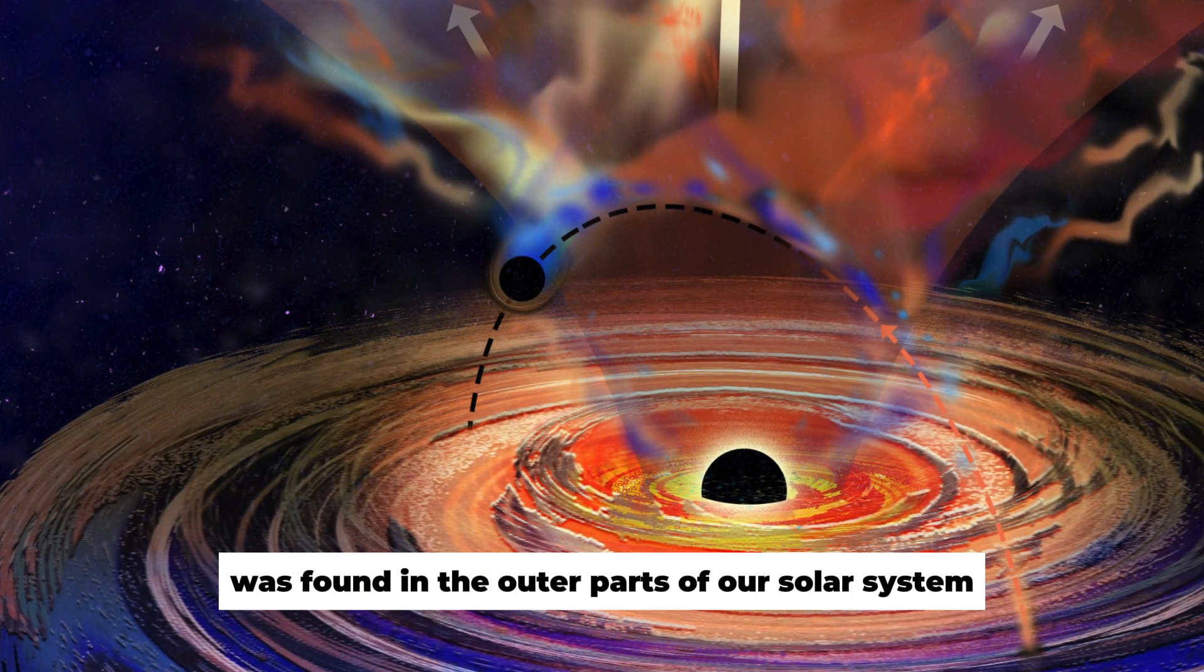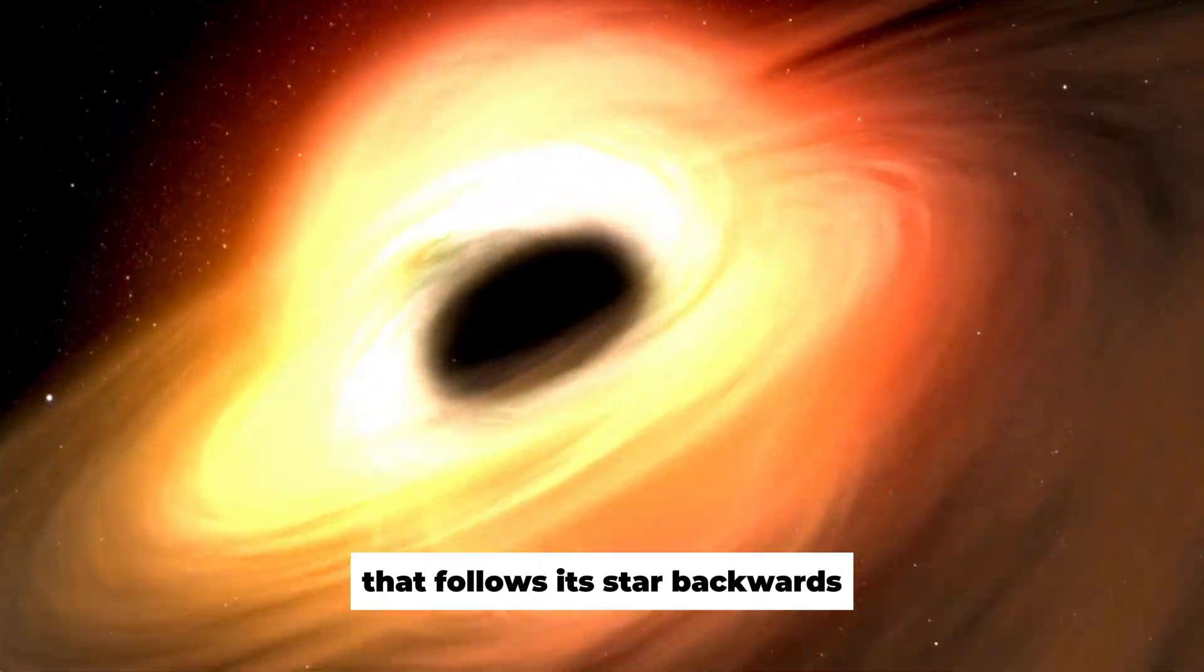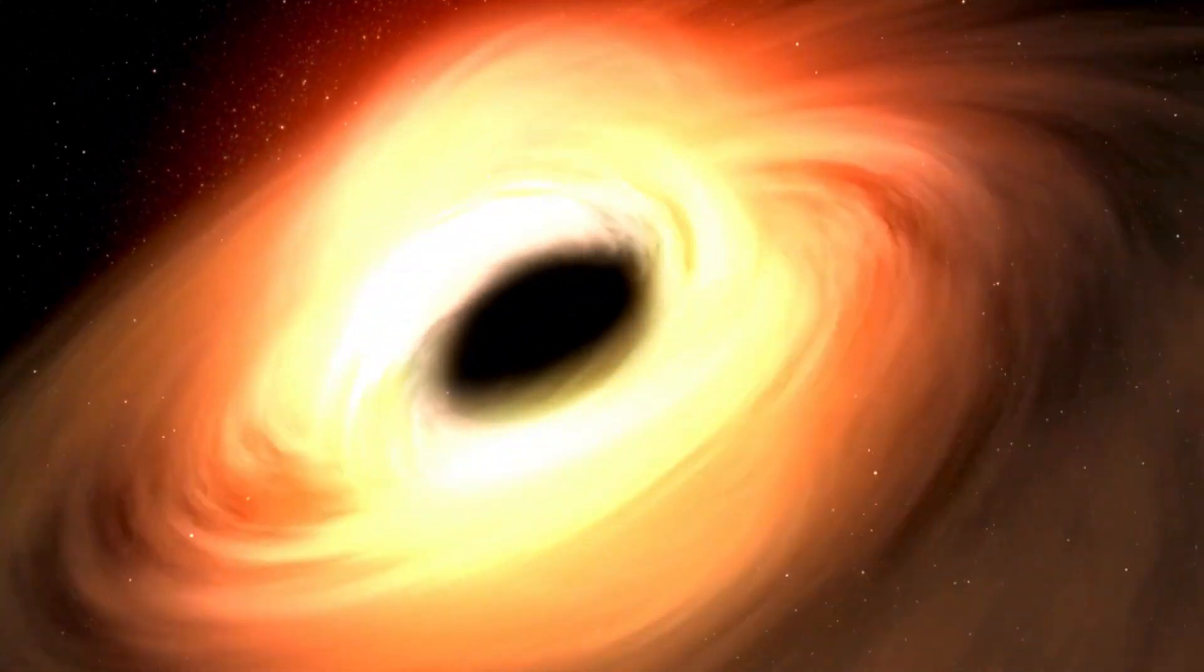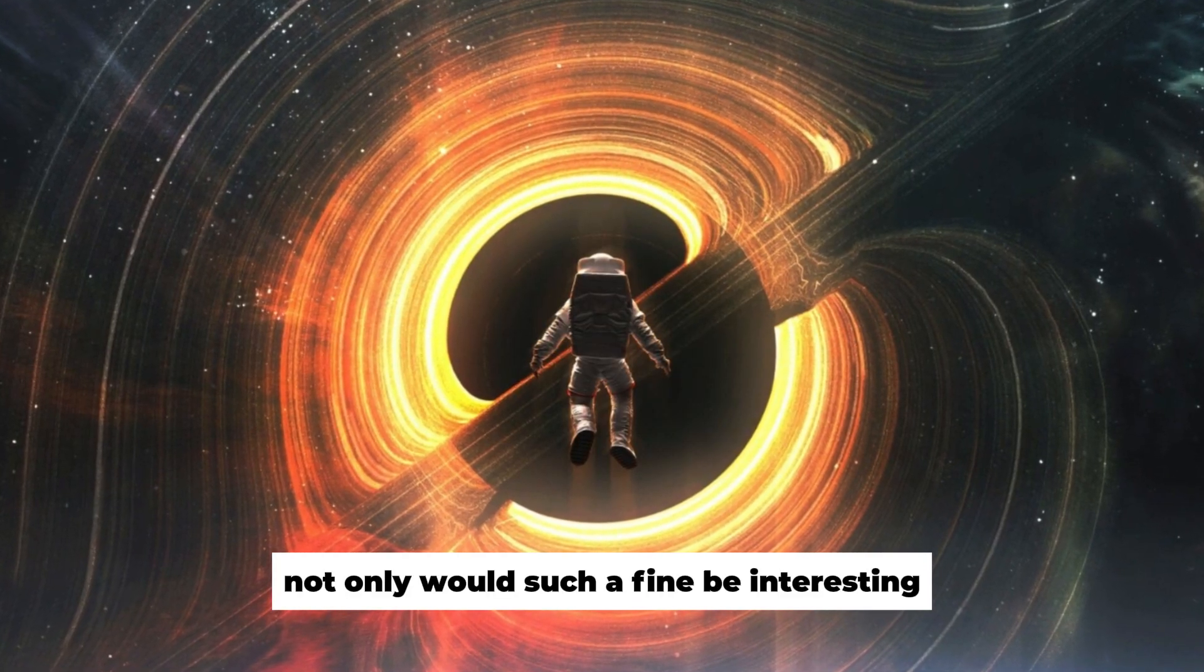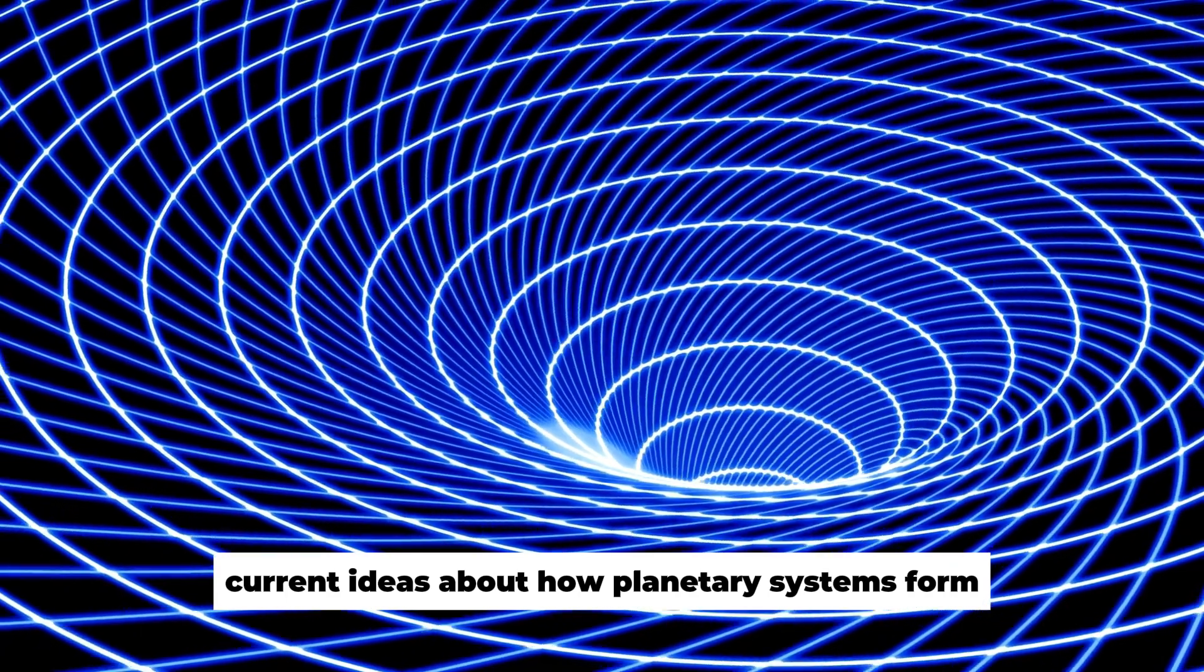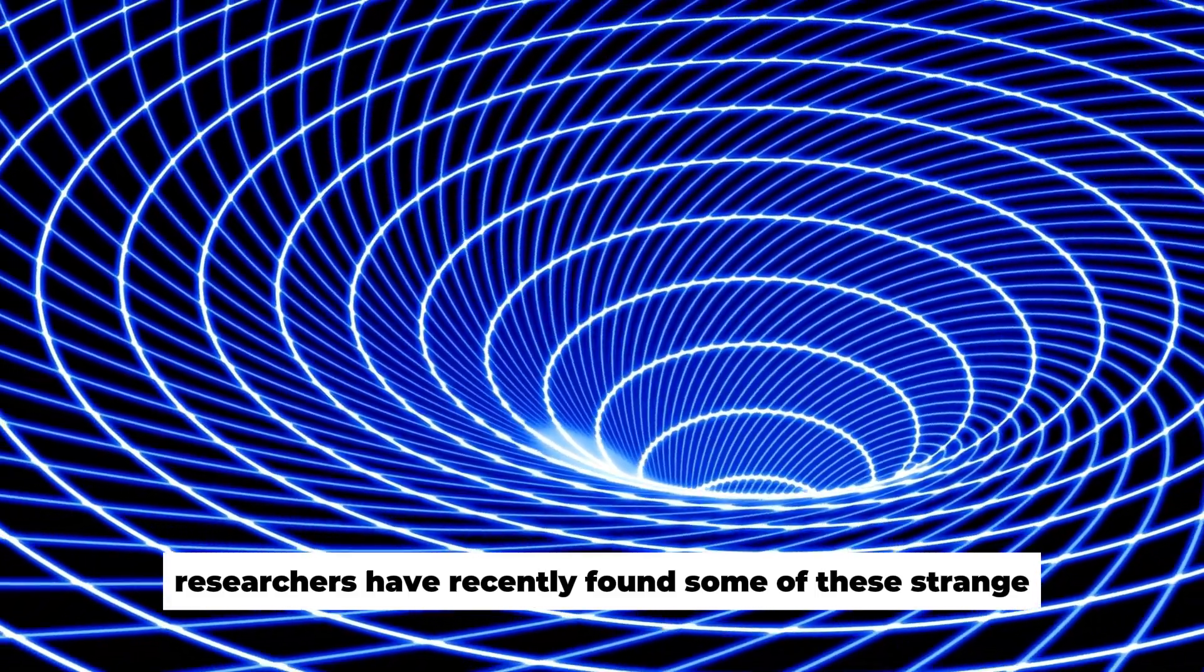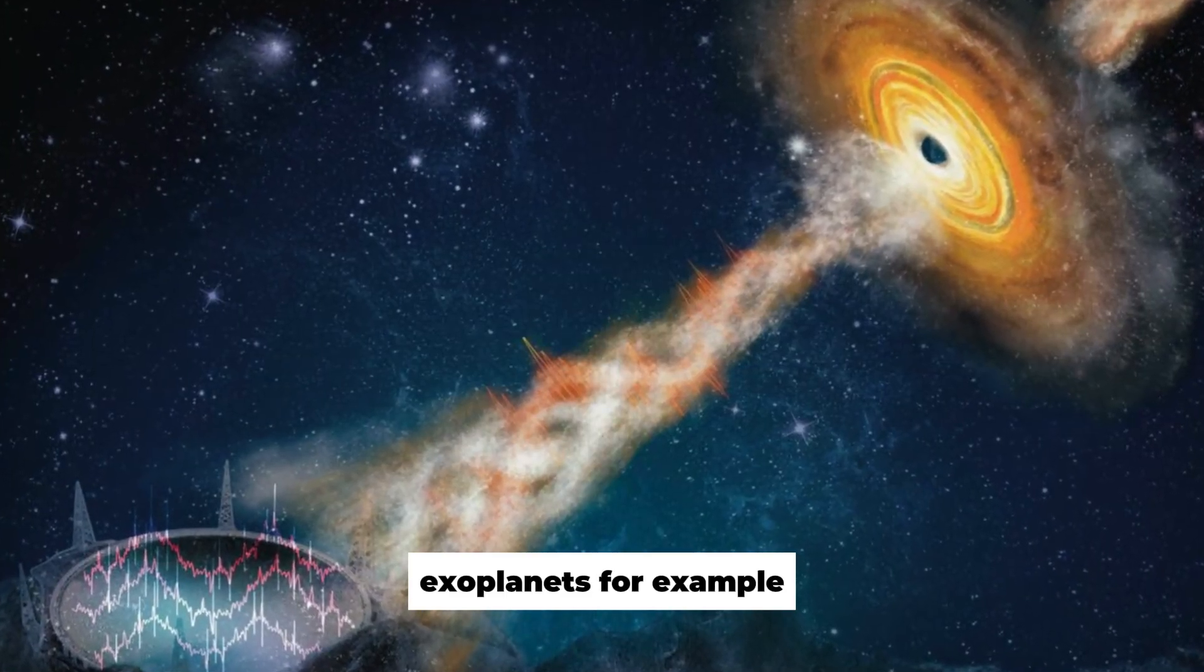Imagine that a planet was found in the outer parts of our solar system that follows its star backwards compared to other planets. Not only would such a find be interesting, it would also call into question current ideas about how planetary systems form. Researchers have recently found some of these strange exoplanets.